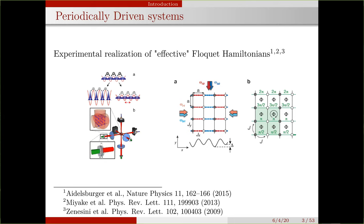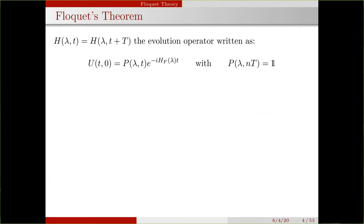Periodically driven systems have been used to develop effective Hamiltonians — Hamiltonians that you wouldn't necessarily be able to design directly in an experiment. For example, you can drive the system periodically and dynamically change the hopping in a cold gas of fermions or bosons, driving the system from a superfluid to a Mott insulating transition. In some cases you can even get non-trivial topological phenomena by doing this periodic driving. This is very interesting for experimentalists because they get to design experiments with Hamiltonians different from what you'd normally do in a lab setting.